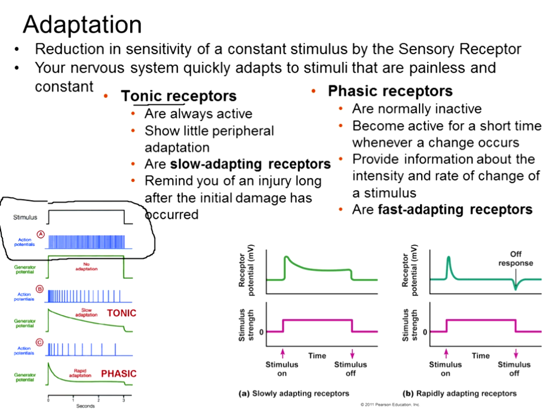If I give a constant stimulus to a tonic receptor, that receptor will initially signal pressure, touch, or stimulus, and then as the stimulus remains constant, the frequency of stimulation will slowly decrease — eventually reaching a rate I don't even register in my brain anymore. This is slow adapting — something is pushing on me, but I start to ignore it or have less conscious awareness as the action potential frequency decreases.